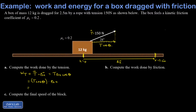So 150 cosine 28 degrees times 2.5 meters. The 150 was newtons, so I'm going to get newton-meters or joules when I'm done. 150 cosine 28 times 2.5 gives me 331 joules.